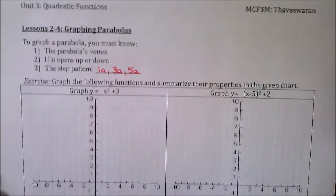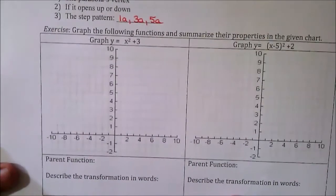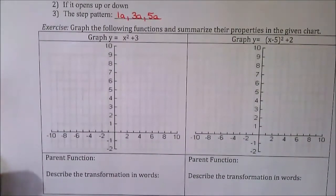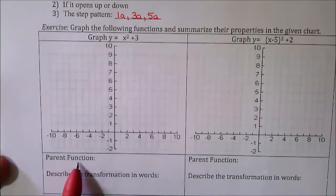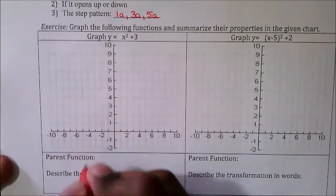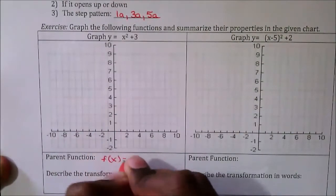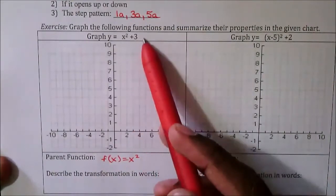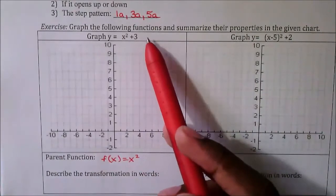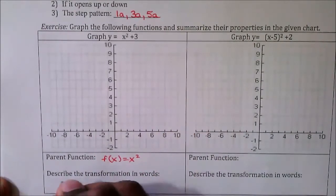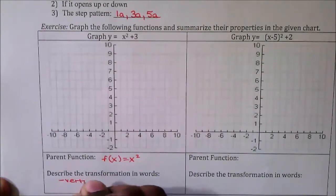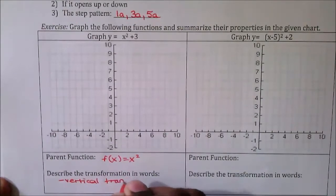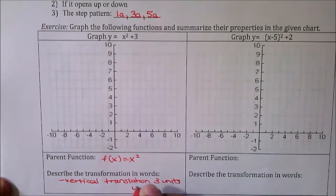Let's go through some examples. The first exercise: graph the following functions and summarize the properties in the given chart. The parent function — all quadratic functions have f(x) = x² as the parent function. Comparing our parent to the given question, we see that there's one transformation that has been applied: three units up.